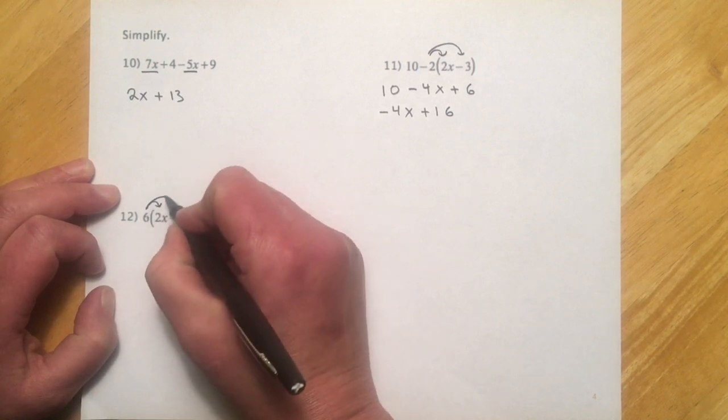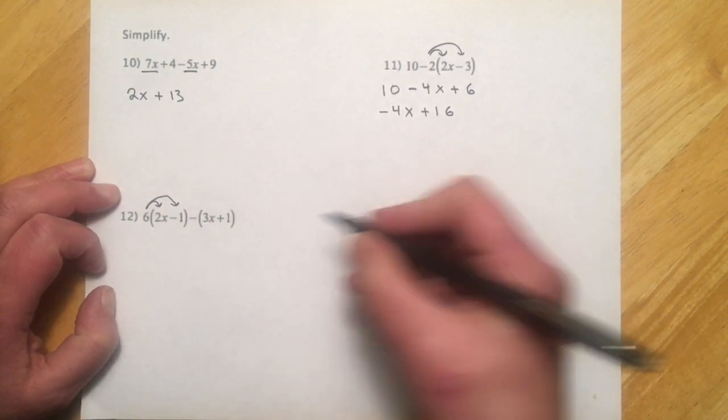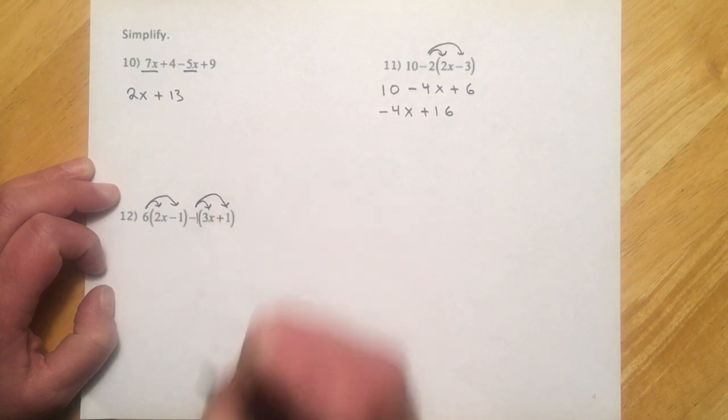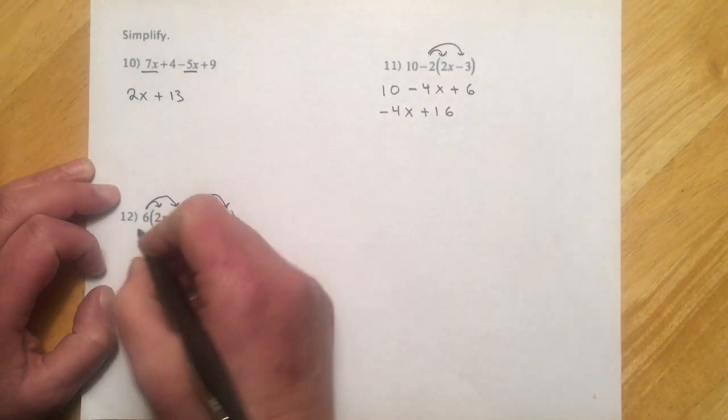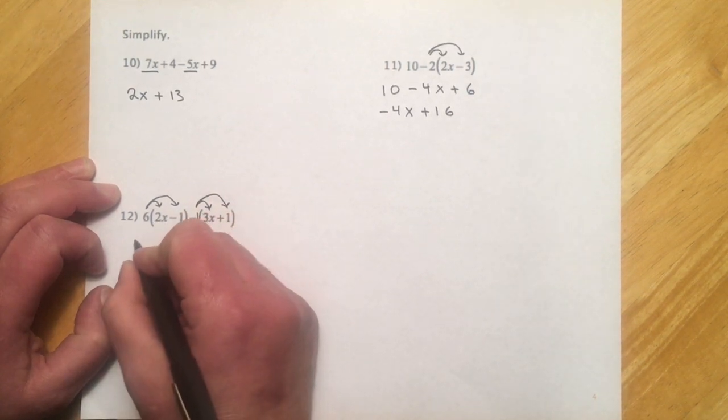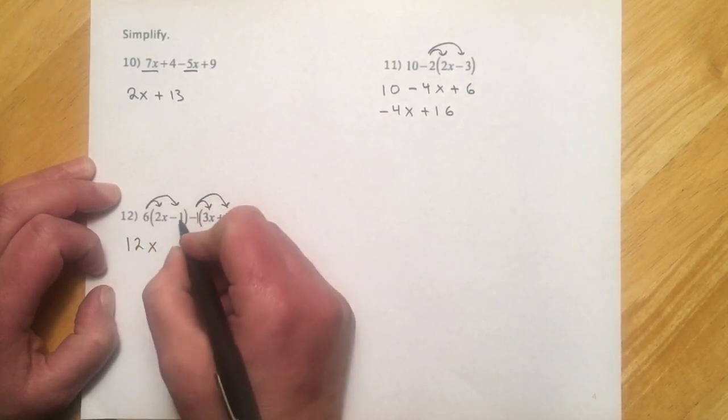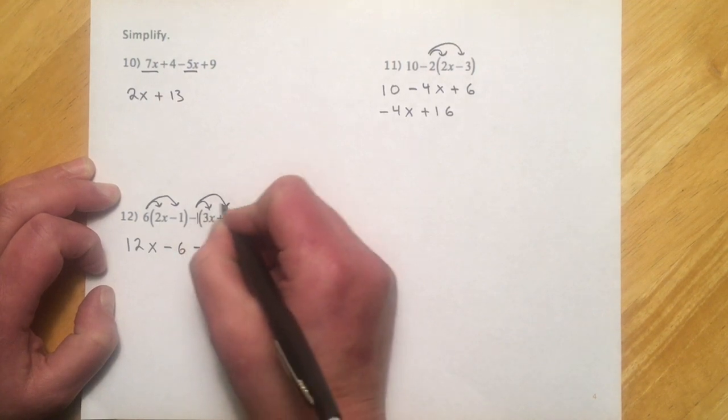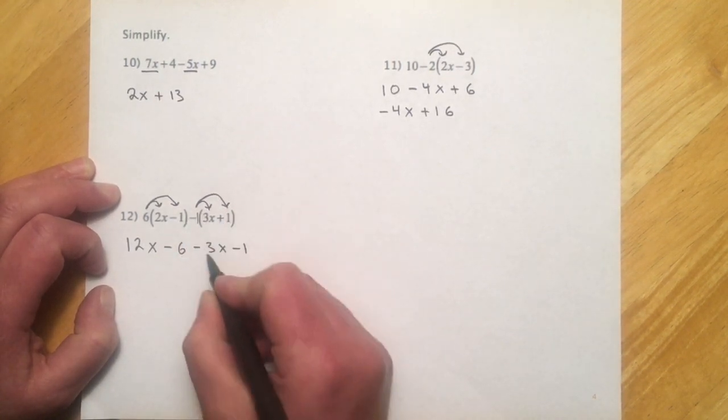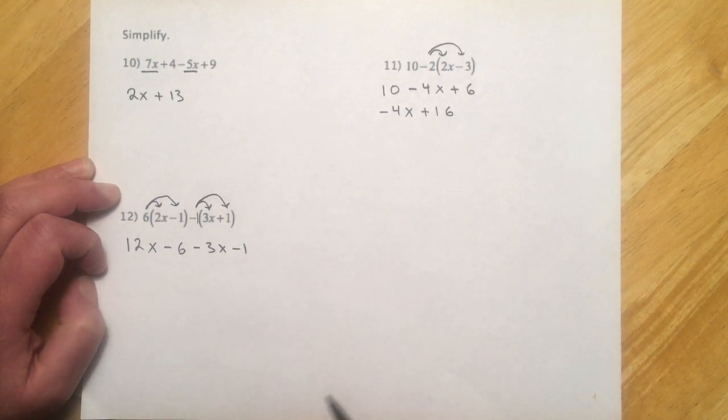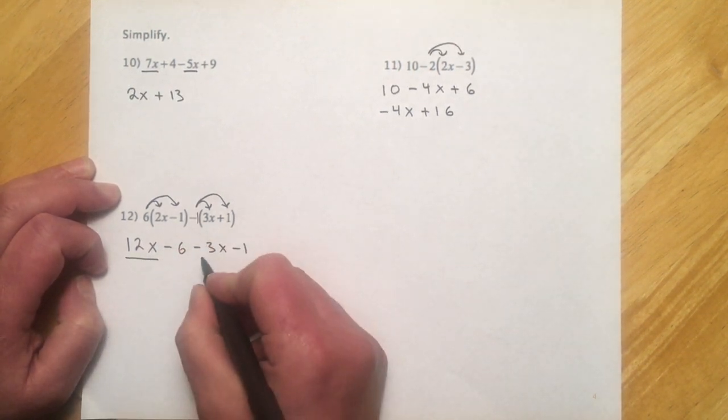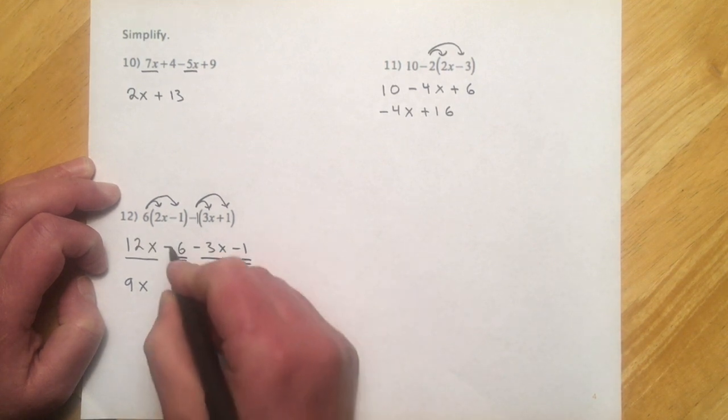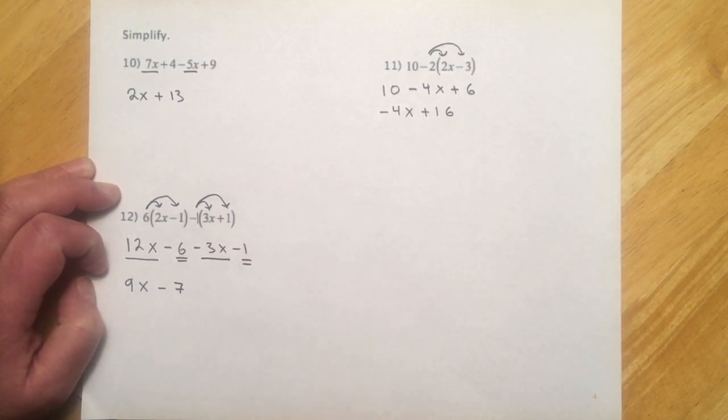This one, we'll do a little distribute to get rid of those parentheses. So, and this thing, this minus in front, we want to think of that as like a little invisible negative 1. And so what it's going to do is just change the signs on everything inside those parentheses. So 6 times 2, 2x, will give us 12x, 6 times negative 1, negative 6. And then negative 1 times 3x, negative 3x, negative 1 times 1, negative 1. So you can see it just flip-flops the signs on whatever's inside. And then looking for like terms, I have 12x's here, minus 3x's there. So that's 9x. And then minus 6, minus another 1. So down 6, down another 1, is minus 7.